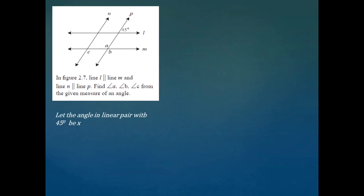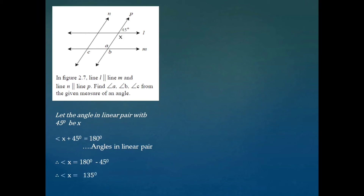To solve this question we need to name an additional angle. Let the angle in a linear pair with 45 degrees be X. Since angle X and 45 are angles in a linear pair, they must be supplementary, so angle X plus 45 is equal to 180 degrees. Therefore angle X is equal to 180 minus 45, which is 135 degrees.